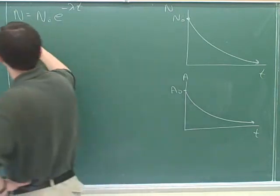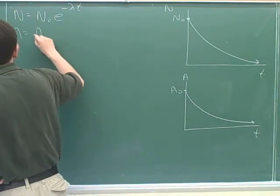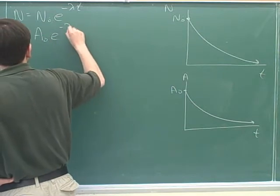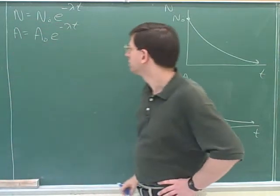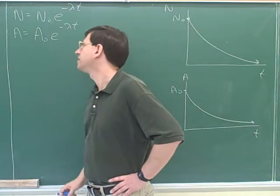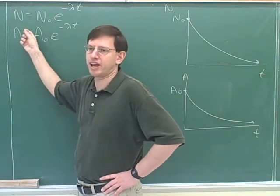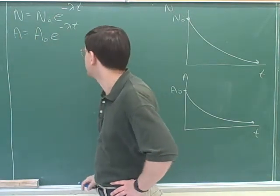So what's the equation for A? A equals A not E to the negative lambda t. Because since they're proportional to each other, the equation that works for N should also work for A, because A and N are proportional to each other.